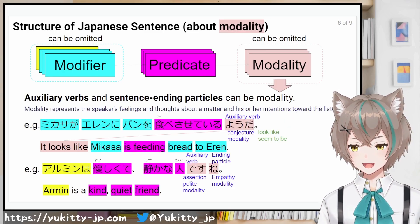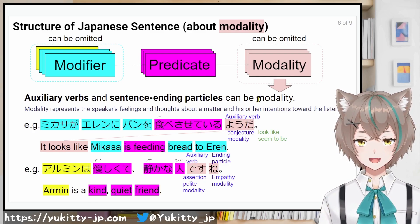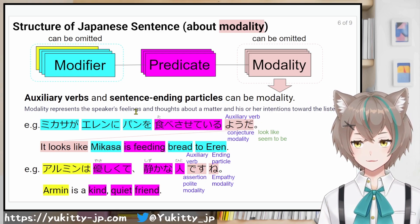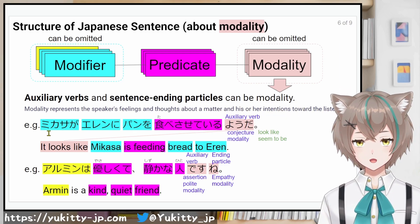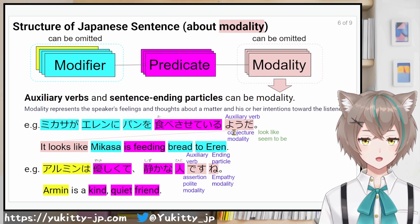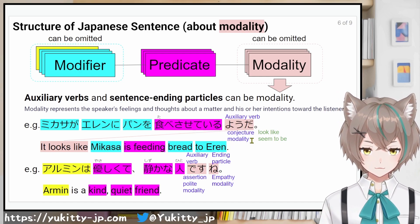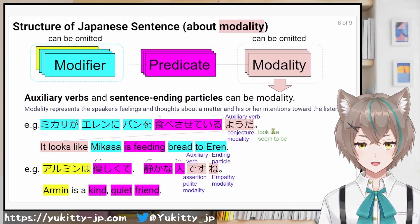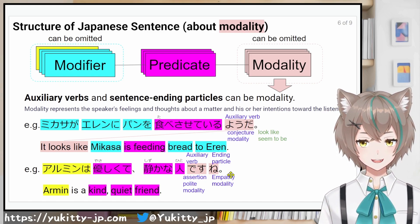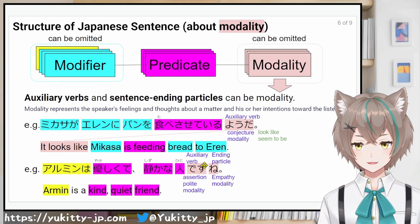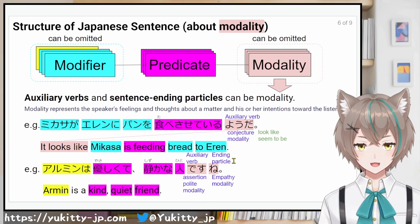From this slide, I'll explain about modality. Auxiliary verbs and sentence-ending particles can be modality. Modality represents the speaker's feelings and thoughts about the matter and their intentions towards the listener. For instance: Mikasaがエレンにパンを食べさせているようだ — ようだ is an auxiliary verb working as conjectural modality, meaning 'looks like' or 'seems to be'. アルミンは優しくて静かな人ですね — です is an auxiliary verb working as assertion/polite modality; ね is a sentence-ending particle working as empathy modality.